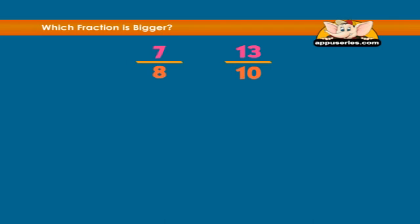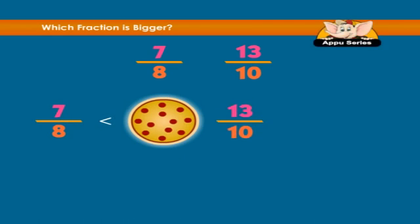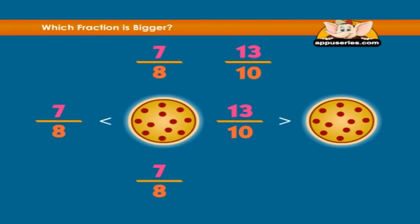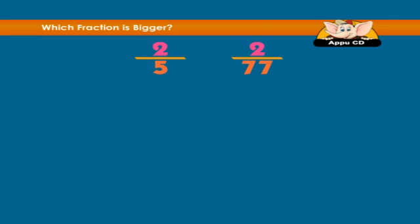Now you try and solve this: which is greater, seven eighths or thirteen tenths? Let's see — seven eighths is less than a whole pizza, and thirteen tenths is more than a whole pizza, so seven eighths is lesser than thirteen tenths.